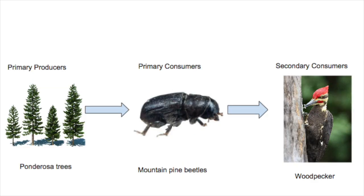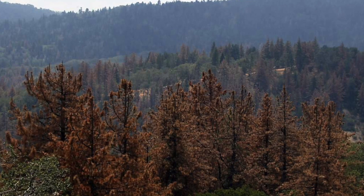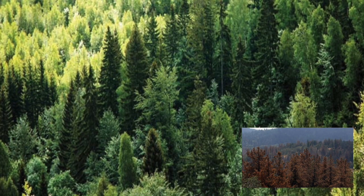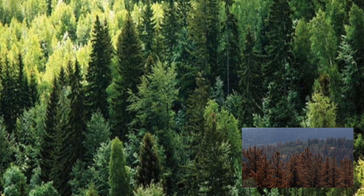The food chain of the mountain pine beetles starts with the primary producers, the ponderosa and limber trees. The beetles are the primary consumers because they eat the trees, and the woodpeckers are the secondary consumers because they eat the pine beetles. If the pine beetles weren't as aggressive in killing trees, other animals that eat pine trees — such as the pine butterfly or the silver spotted tiger moth — could increase since their food source is growing. Less pine beetles could allow the pine trees to thrive and restore a balance to the ecosystem disrupted by the pine beetle epidemic.